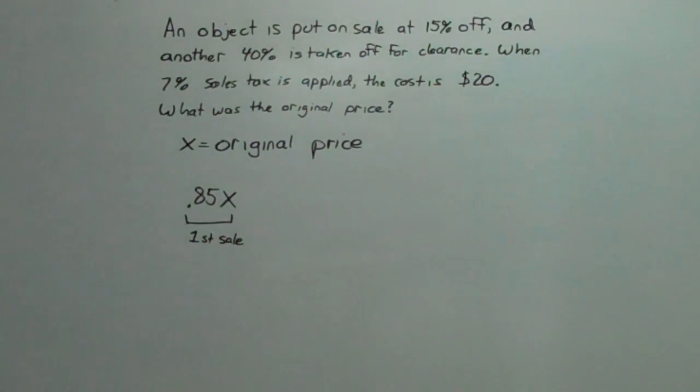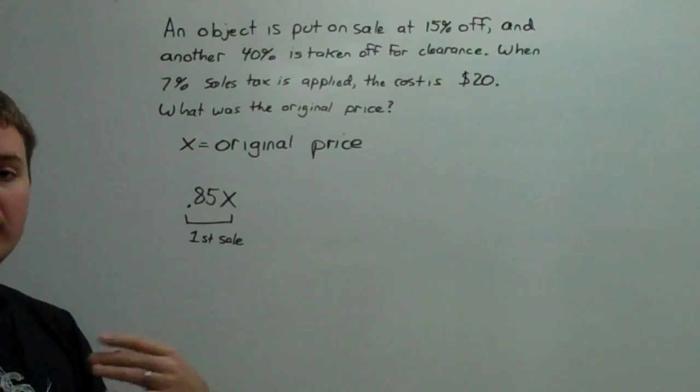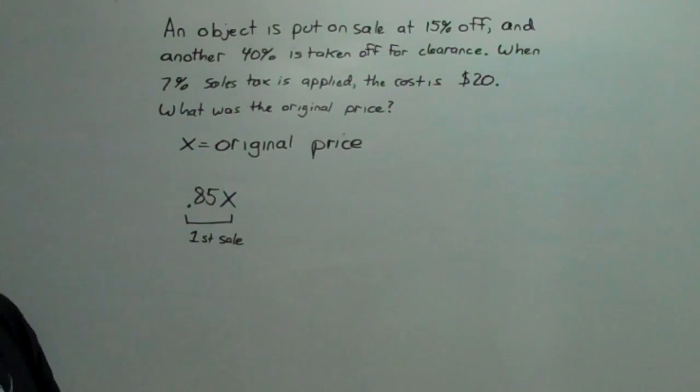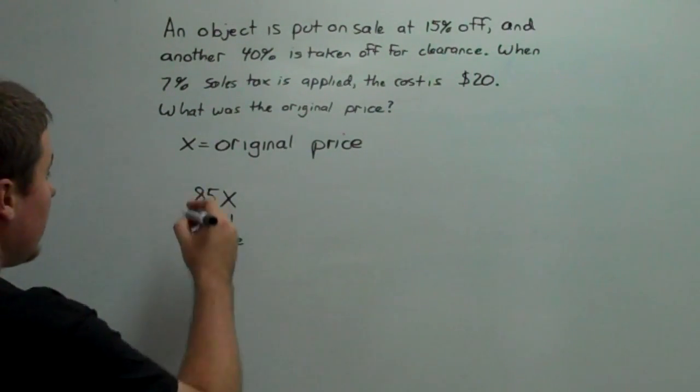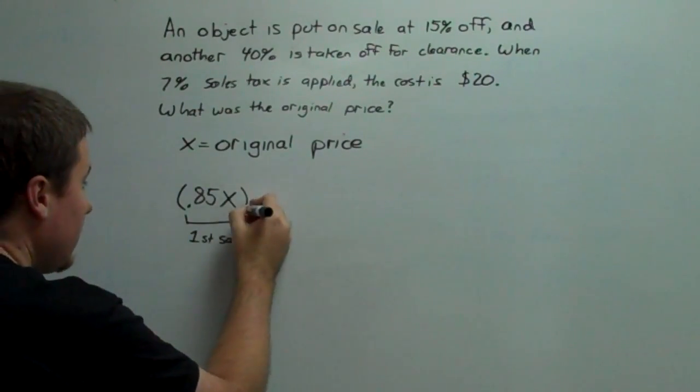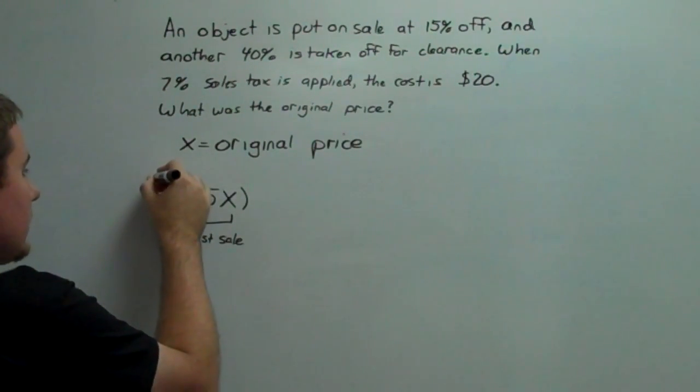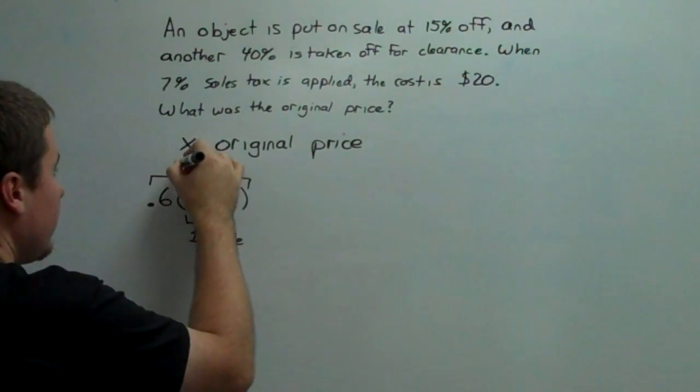Now, when it's put into clearance, the 40% is taken off of the already lowered price. Well, the already lowered price is 0.85x. So if we're losing 40%, we're keeping 60%. So I'm going to multiply this by 0.6, and this is going to give me my second sale price.